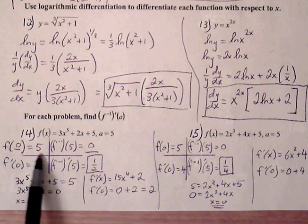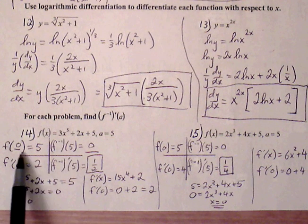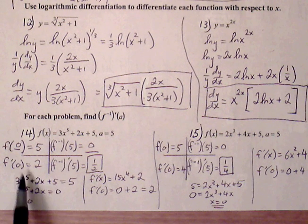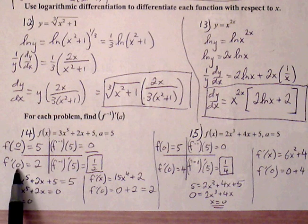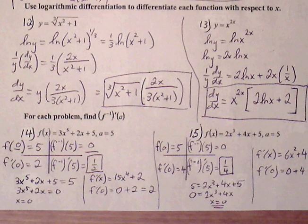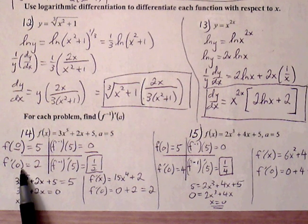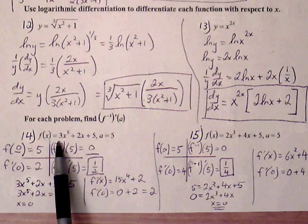So f of 0 equals 5, which means f inverse of 5 equals 0 — order pairs are always switched between a function and its inverse. If we find f prime of 0, we can use that slope to determine the slope at the inverse curve. To find f prime of 0, we first find f prime of x: 15x to the fourth plus...